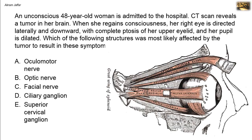Let's remember the extraocular muscles involved in the movement of the eyeball. We have four recti muscles: the superior rectus, the lateral rectus, the medial rectus, and the inferior rectus muscle. Then we have two obliques: a superior oblique muscle and an inferior oblique muscle below.